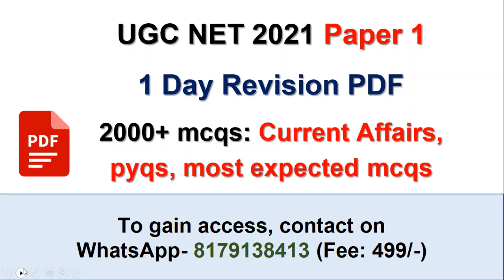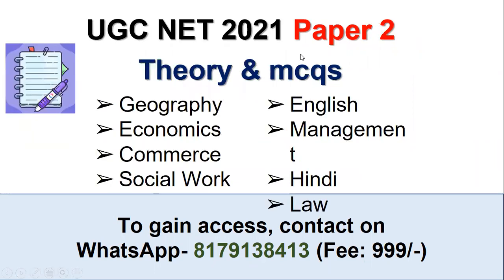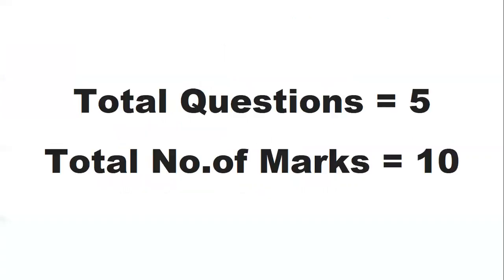Apart from this, if any student is appearing for Paper 2 and looking for theory and MCQs, you can also get in touch with the given number. The fee for that is 999. Theory and MCQs will be available for subjects including Geography, English, Economics, Management, Commerce, Social Work, Hindi, and Law. You can get subject notes as well as MCQs.